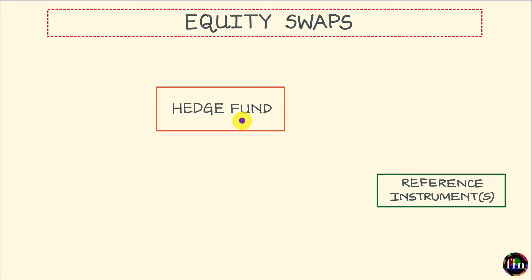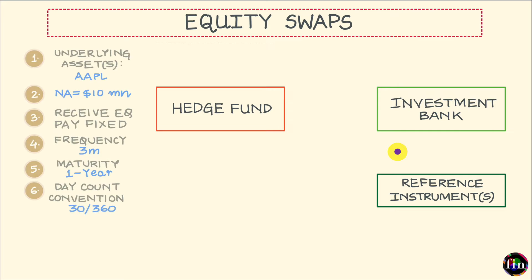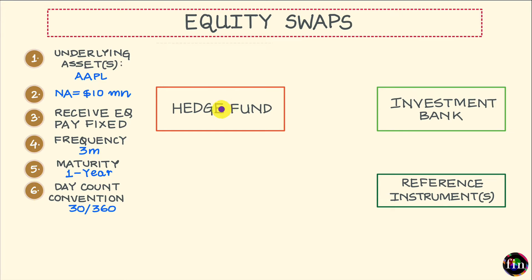This is where an equity swap can come in handy. Therefore, what this hedge fund does is that it calls up the sales desk of its preferred investment bank and asks this investment bank to structure or customize an equity swap for it — an equity swap which references the stock of Apple. The investment bank then, together with the hedge fund, finalizes the attributes or terms and conditions of this equity swap, and these attributes have been listed here.